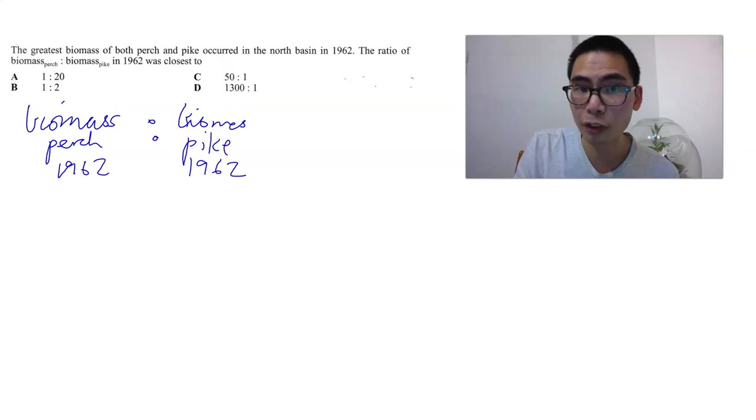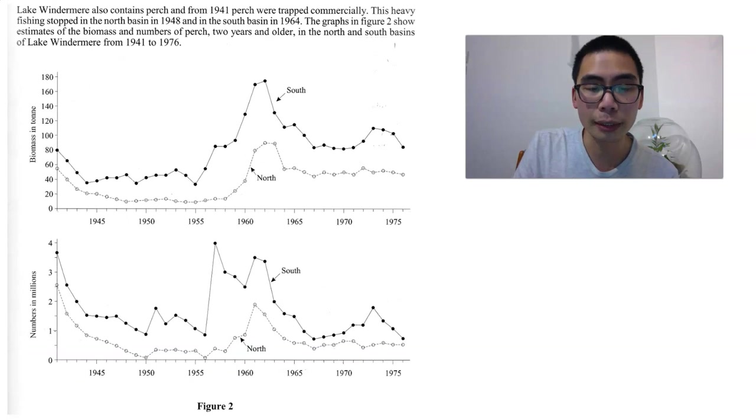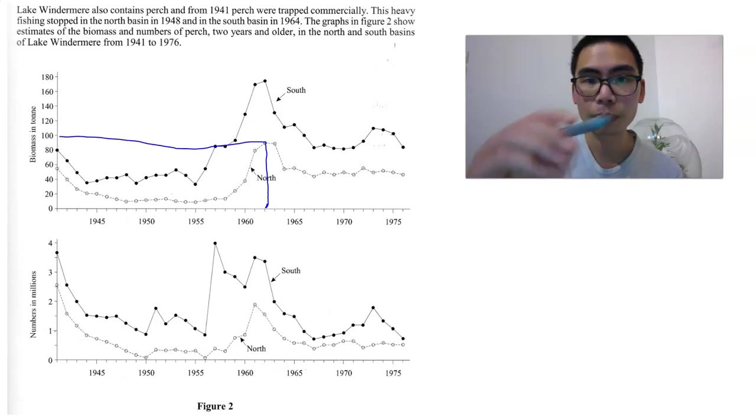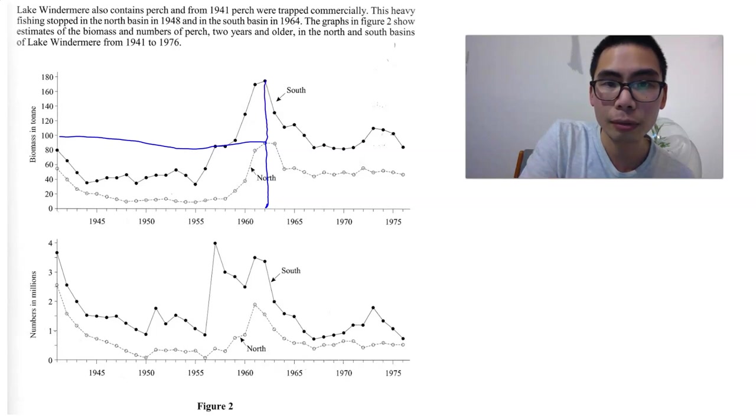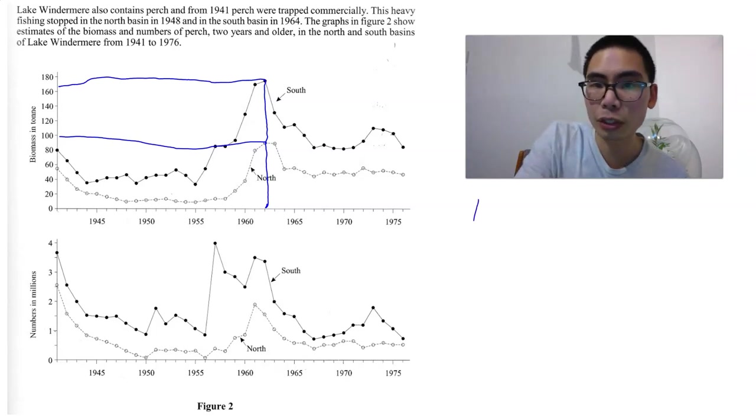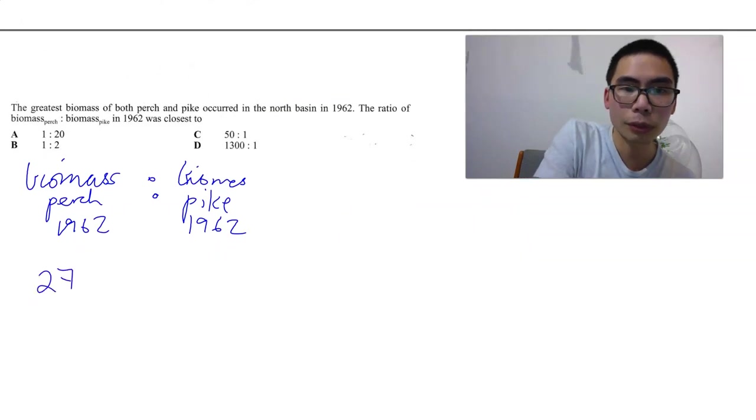So let's have a look at the biomass of perch in 1962. Let's do this one by one. We get the numbers, we put it into our ratio. Figure 2, if we look at the biomass in tons - take note of the units. 1962, it looks like it's about 100 tons, roughly. And if you go to the South, it looks like it's about 170. So we've got 100 tons and 170, so we have a total of 270 tons.